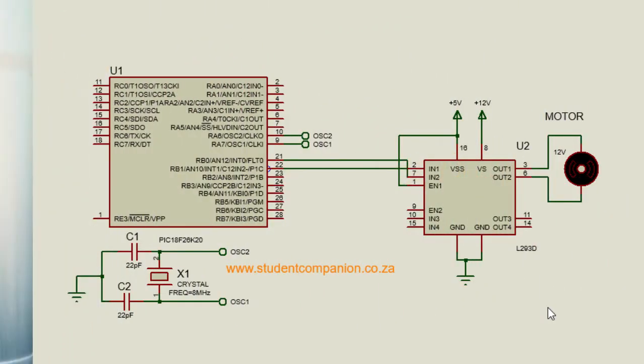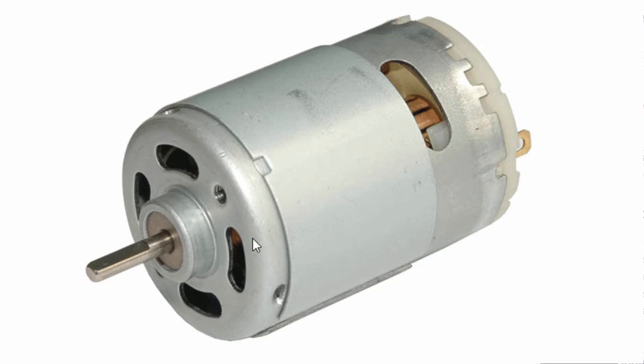DC motors are used in many industrial, commercial and domestic applications. We have DC motors in toys, irrigation pumps, robotics, drills and many other applications. In this tutorial we're going to learn how you can interface a DC motor with a PIC microcontroller and see how you can rotate it in clockwise or anti-clockwise direction.